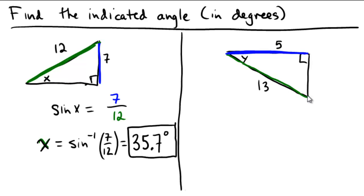So in this case, we have a y with an adjacent leg and a hypotenuse, so we are going to use the cosine function this time, the cosine ratio. Cosine of y equals an adjacent side, the adjacent is blue, 5, and the hypotenuse is 13.